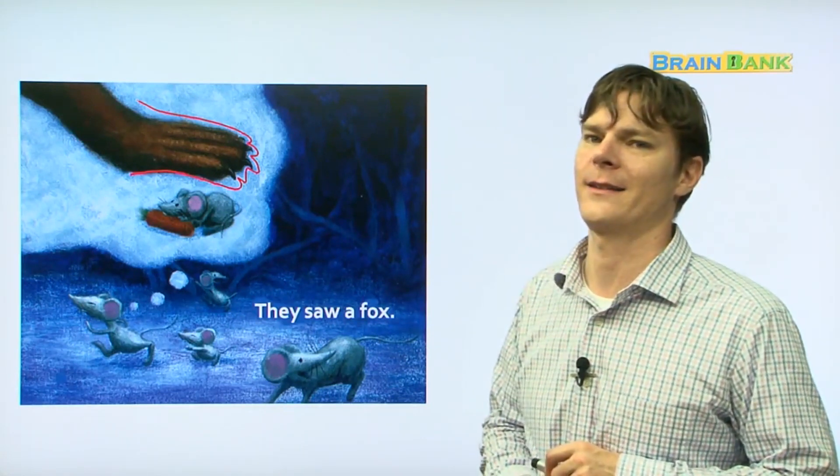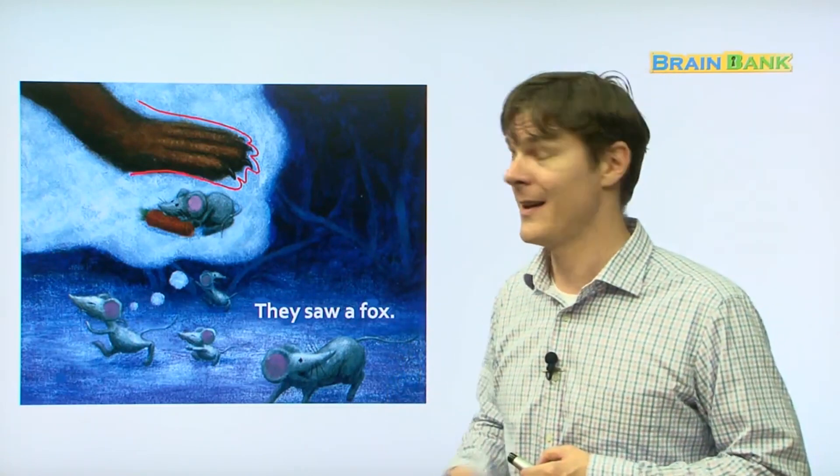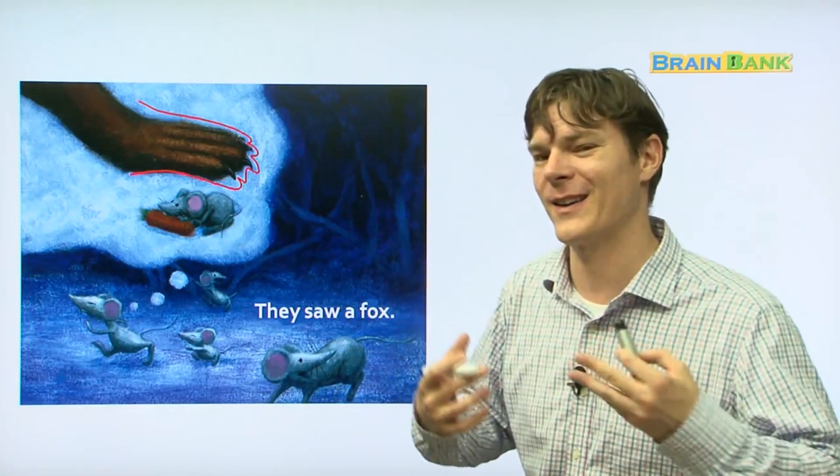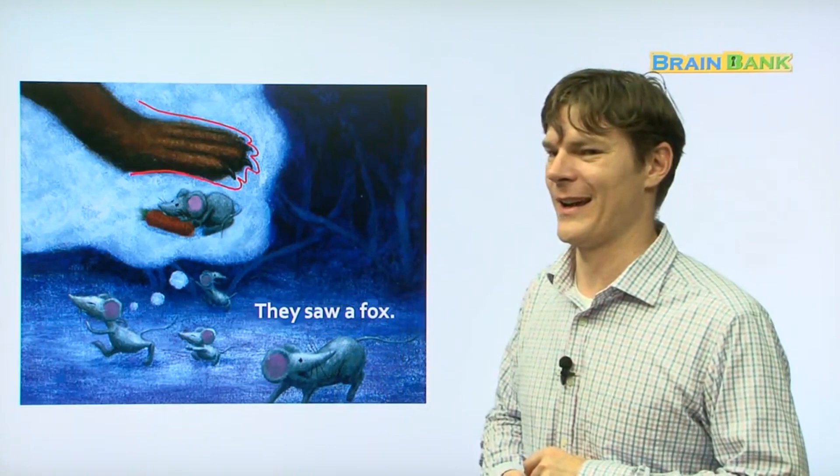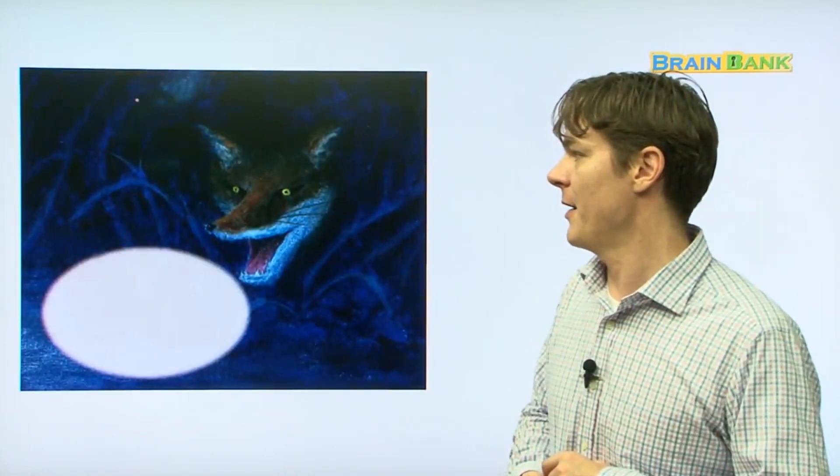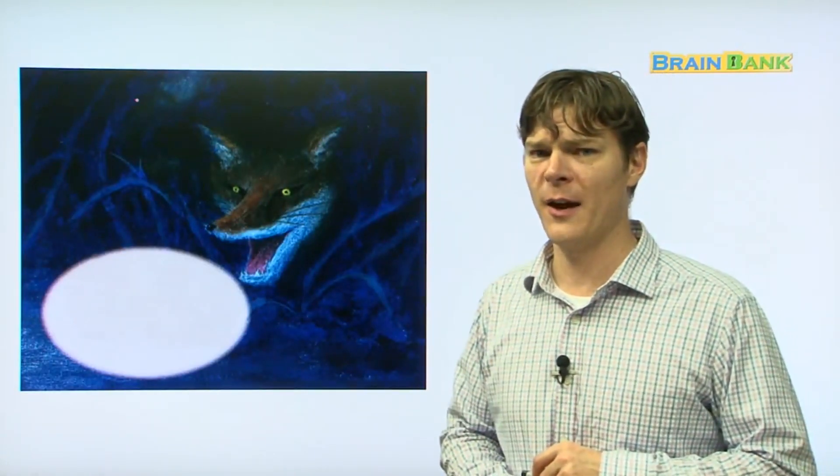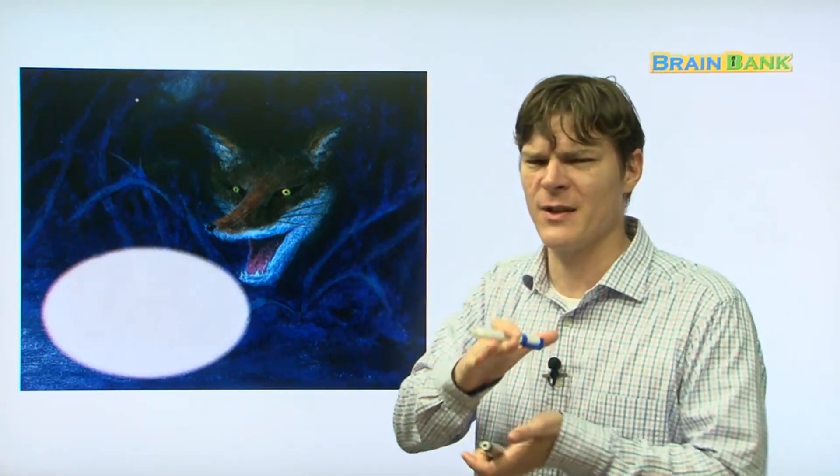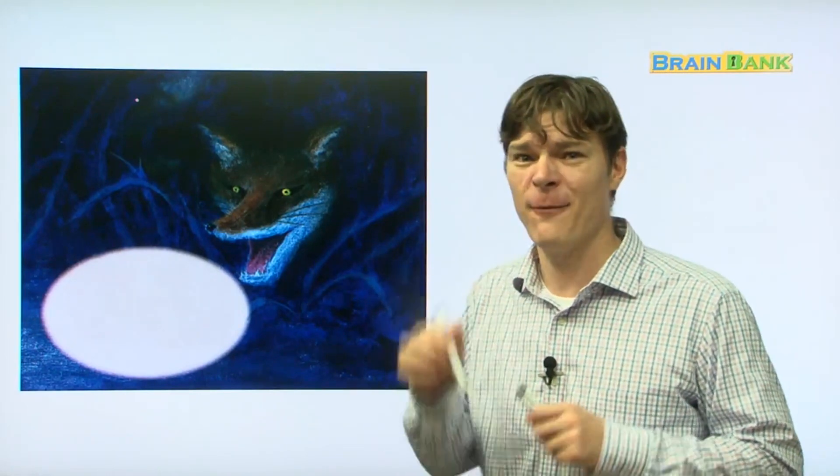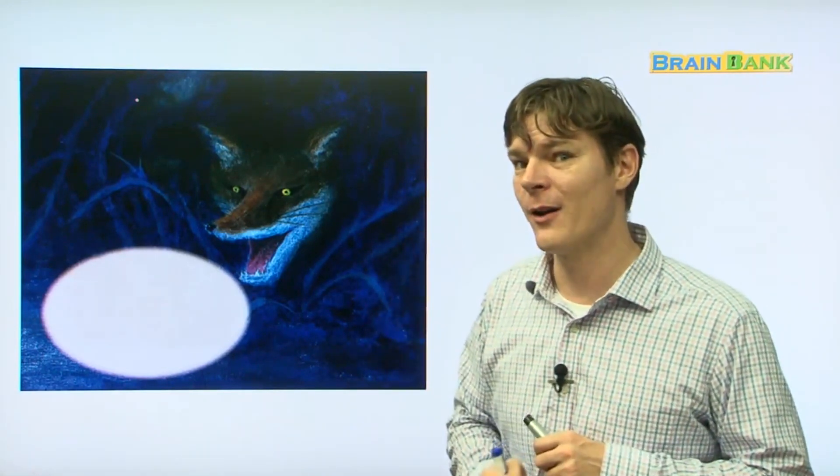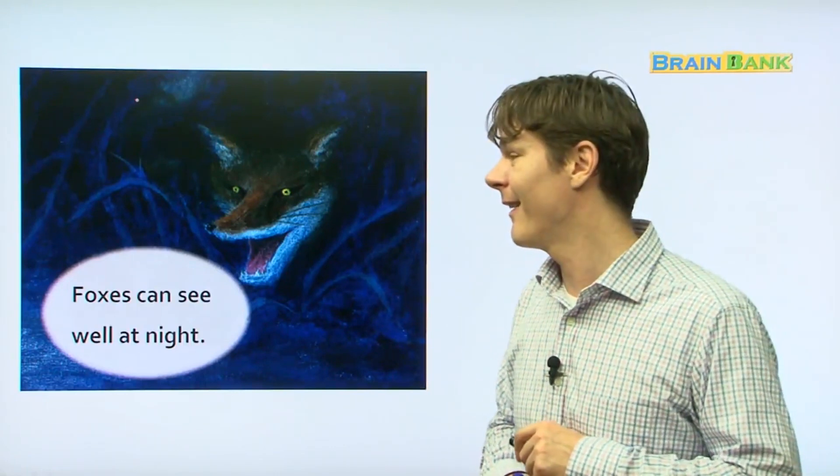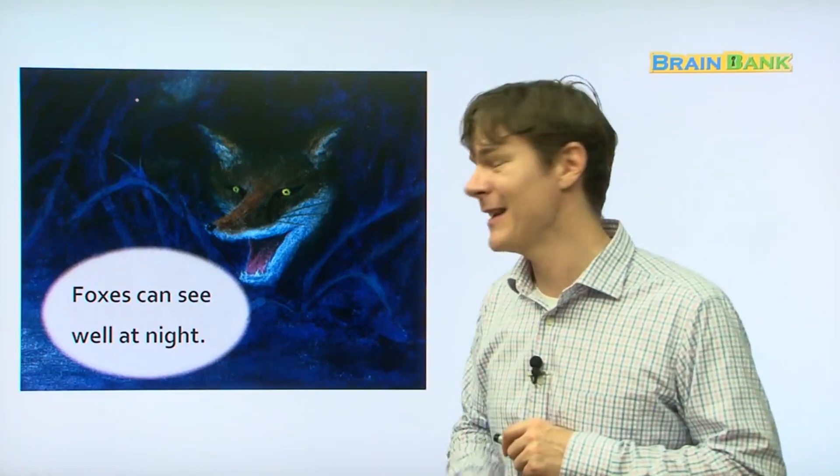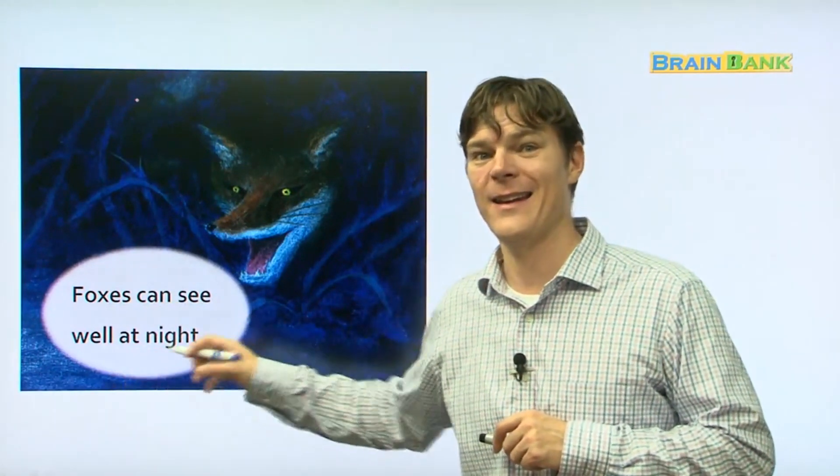They saw a fox. It was a fox. Let's see what he looks like. There he is. The fox is so scary. You know, foxes with their big giant paws, they can pounce on the mice really well because they have four paws. But you know what else foxes can do very well? Foxes can see well at night.